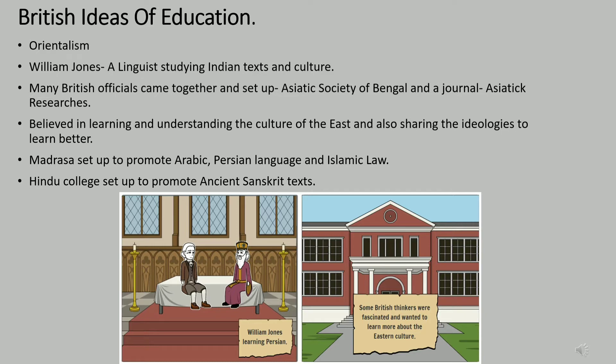Some British officials felt it was important for Indians to learn their own texts rather than British alien culture. With this view, madrasas were set up to teach Arabic, Persian, and Islamic law, and Hindu colleges were established to study ancient Sanskrit texts.